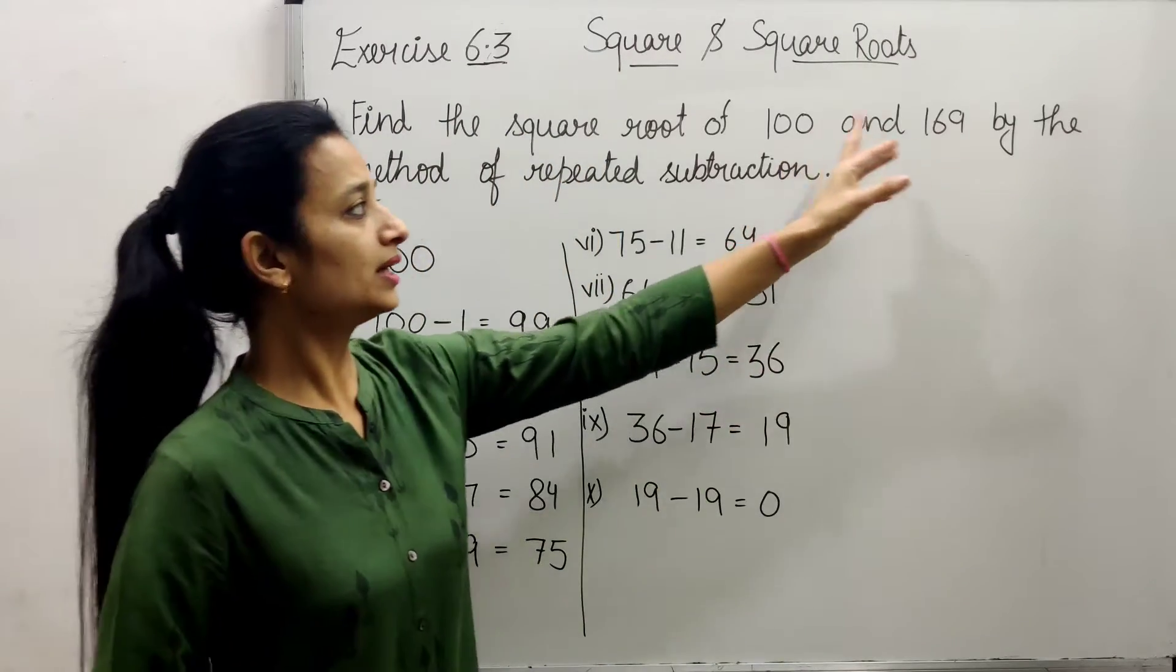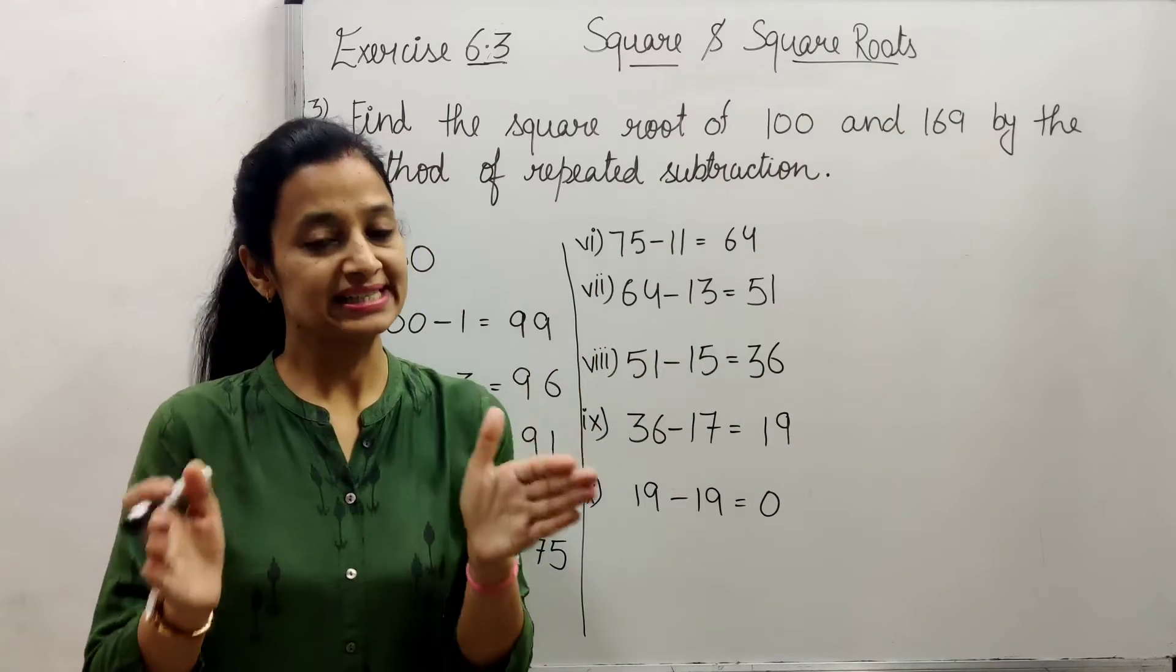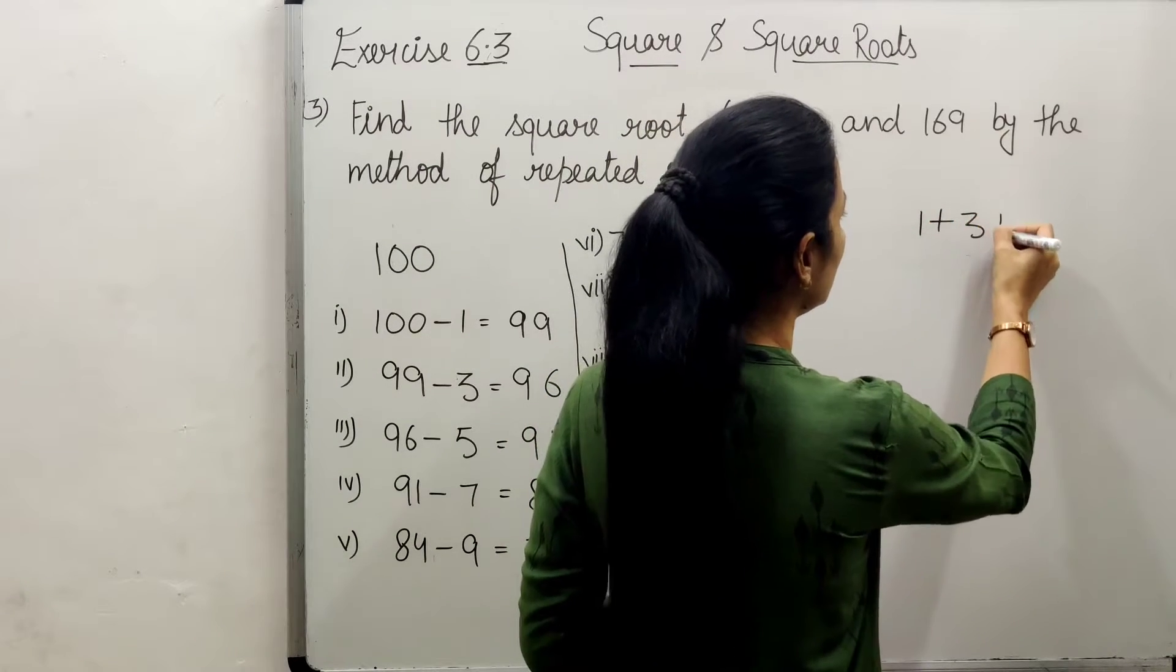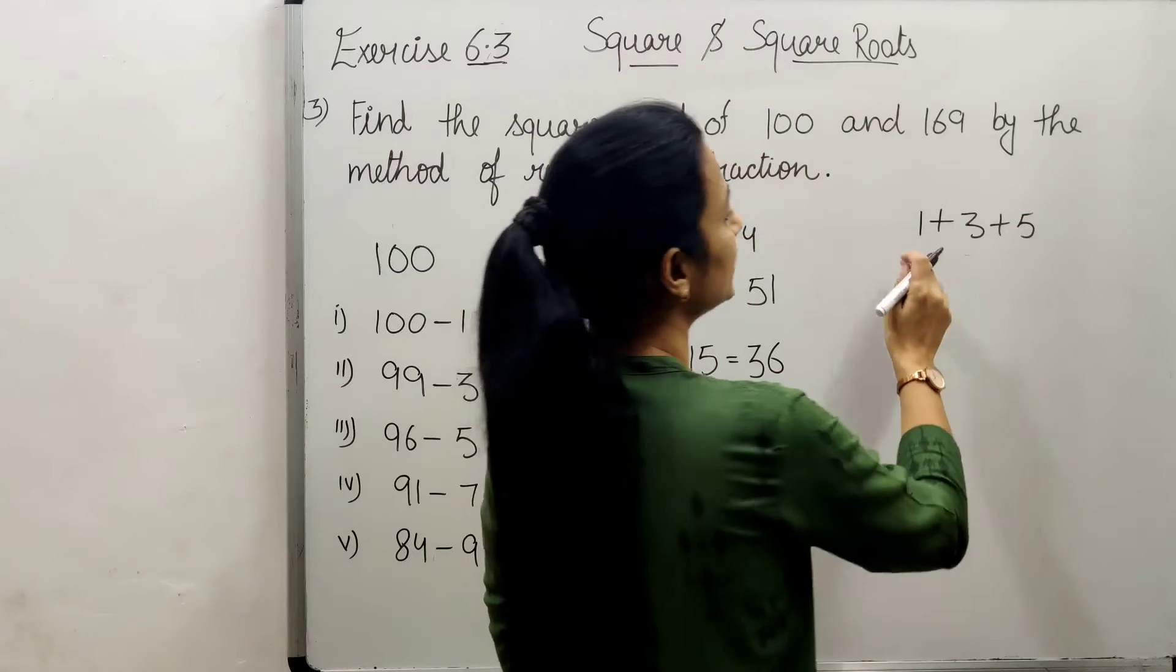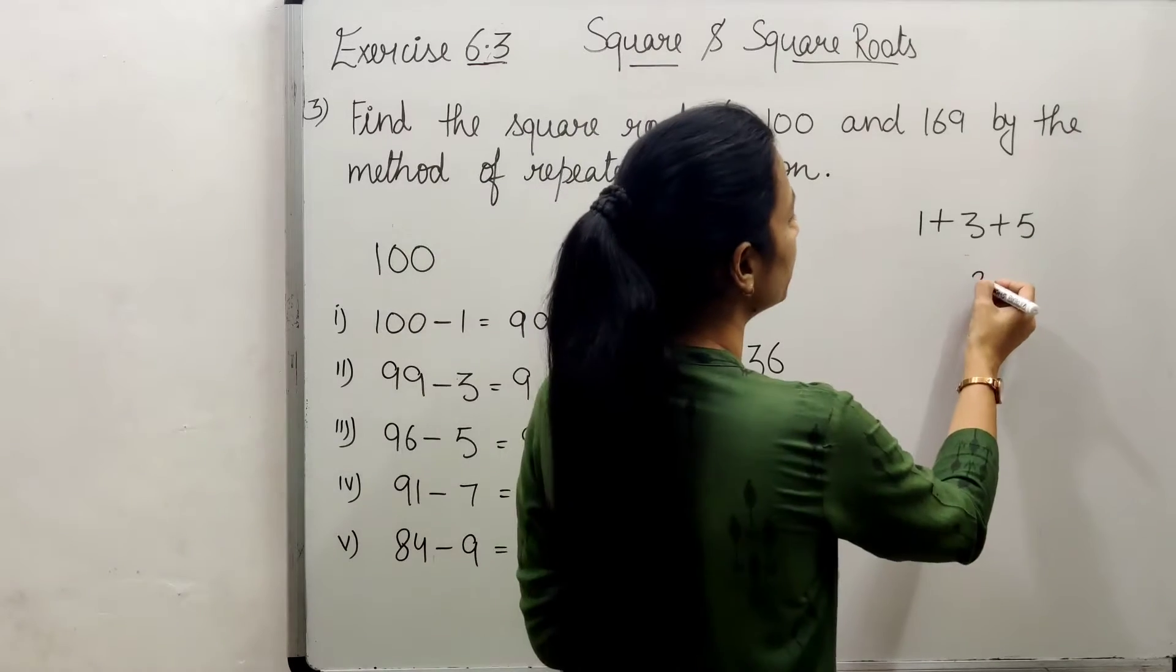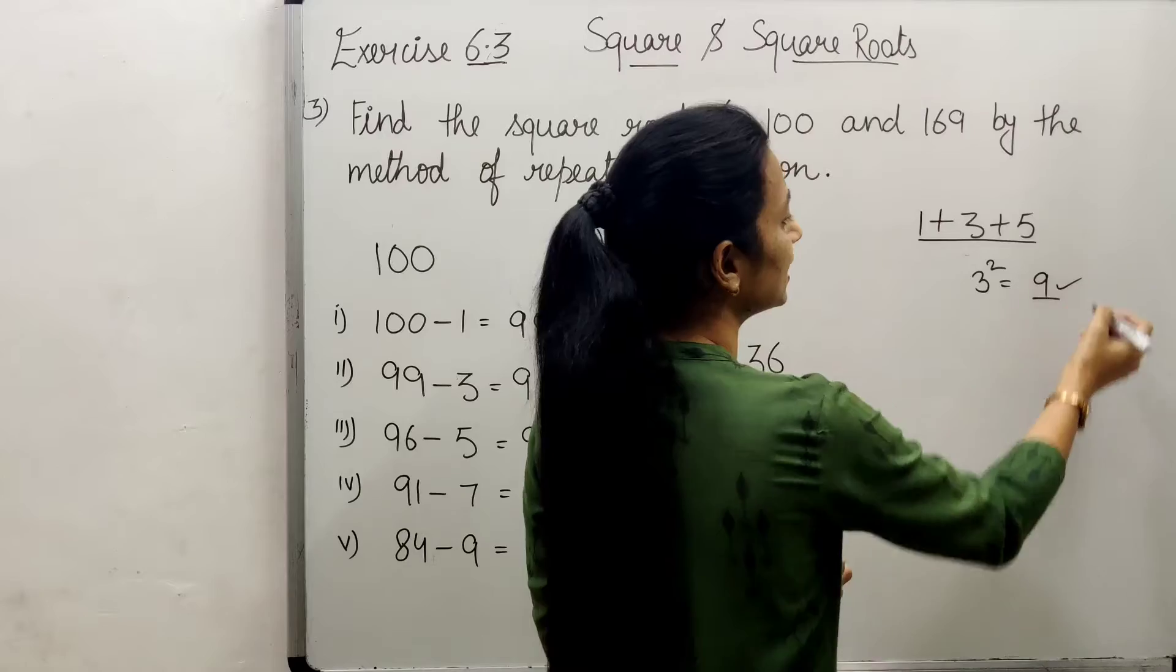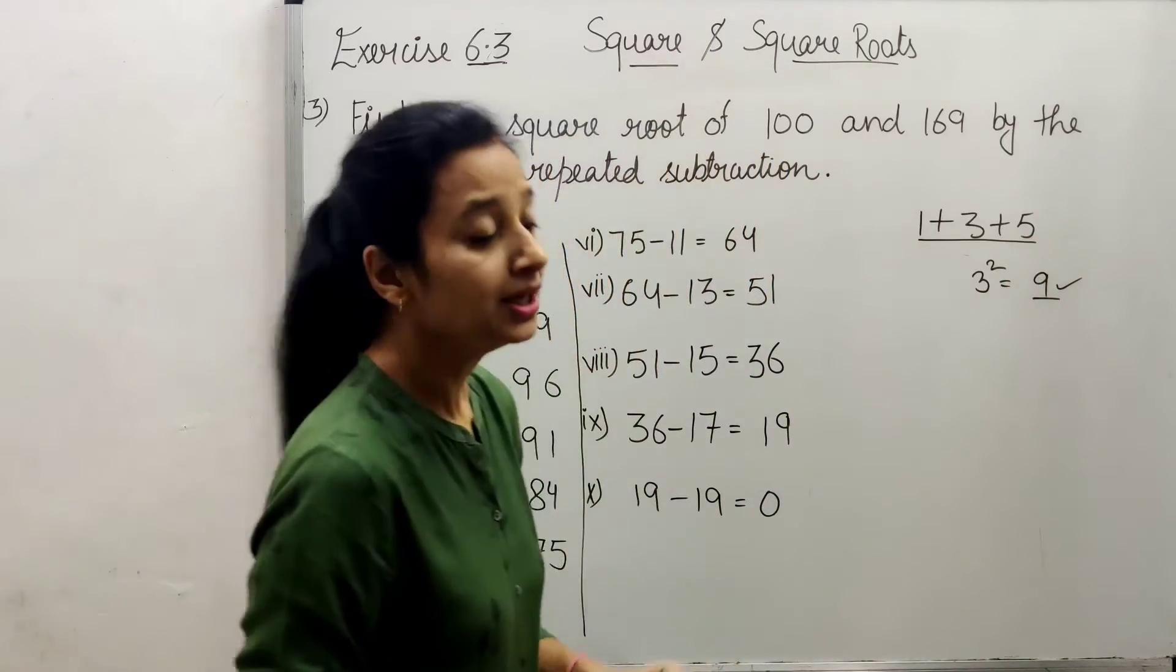As we know, the square of any number equals the sum of all odd successive natural numbers. For example, if we want to find 1 plus 3 plus 5, we can count the digits - there are 3, and 3 squared gives us 9. So the answer is 9.